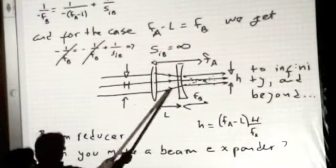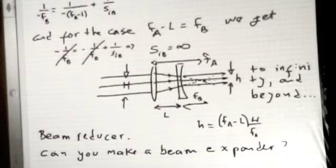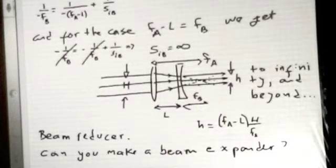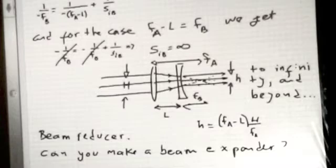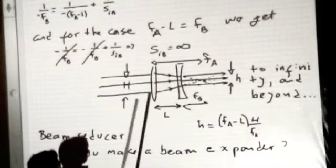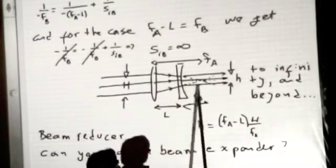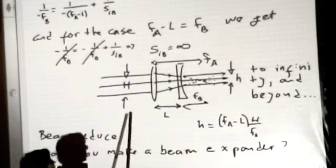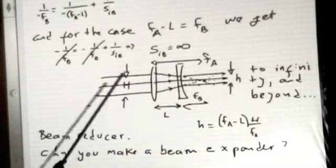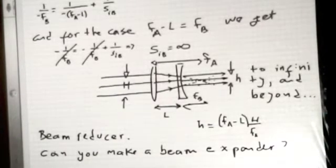This setup is called a beam reducer. You would have a laser beam and you want to reduce its size — concentrate it. Maybe you have a smaller optical element and the incoming beam is too wide, so most of it misses the lens. You want to compress the laser light and make it smaller. With these two lenses set up that way, the width of the beam exiting will be smaller than the incoming beam. You can also make it expand — think about what you would do to make the beam bigger.